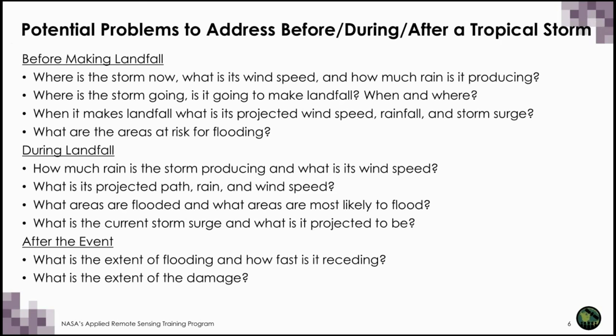Listed here are some critical questions during the different phases of a storm. Before the storm makes landfall, we want to know where it is, its characteristics such as wind speed, how much rain it's producing, where it's going, and if it makes landfall, where and when. Once the storm makes landfall, it's important to monitor wind speed, rainfall, flooding areas, and storm surge projections. After the event, it's important to assess the extent of flooding, how fast waters are receding, and the extent of the damage.